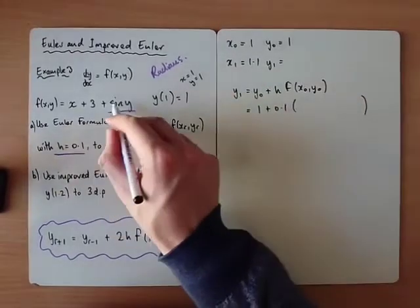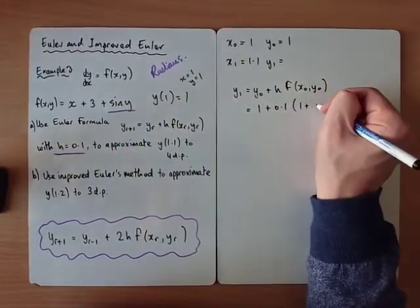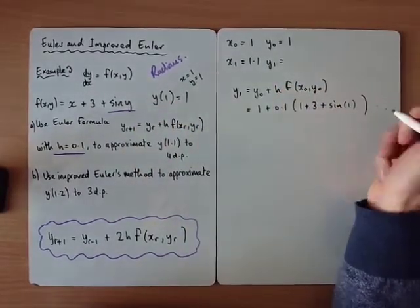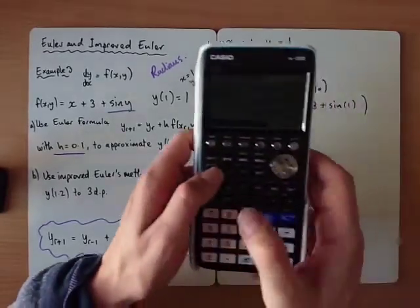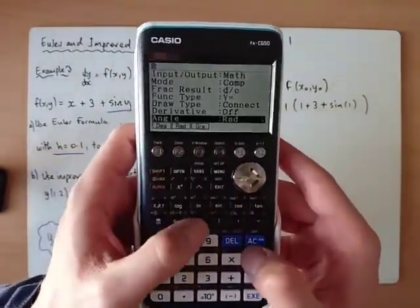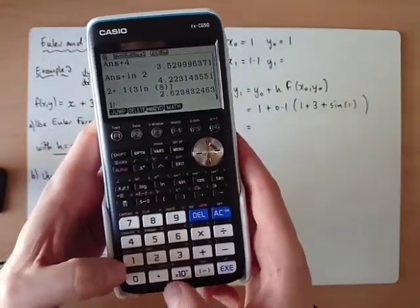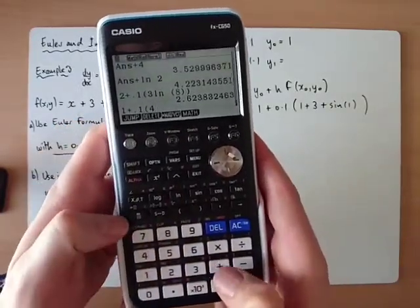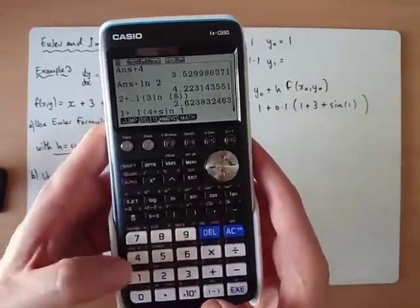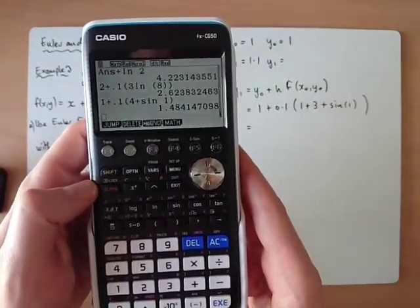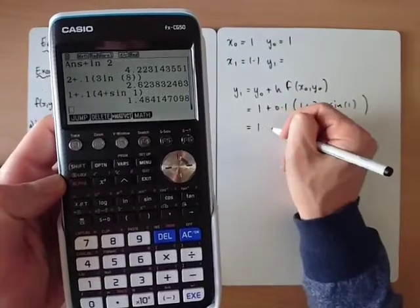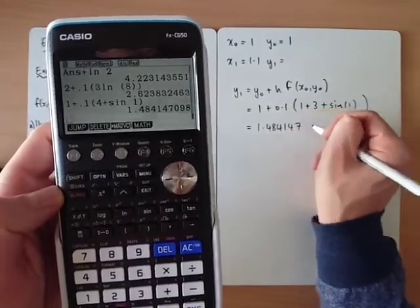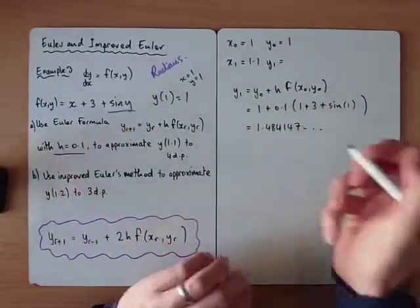So the function is x plus 3, that'd be 1 plus 3, plus sine of y, which is also 1. So 1 plus 0.1 times 1 plus 3, which is 4, plus sine of 1. And I'm getting 1.4847, to 4 decimal places.